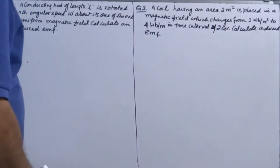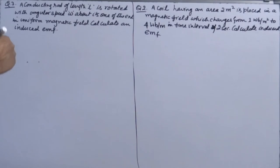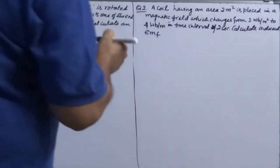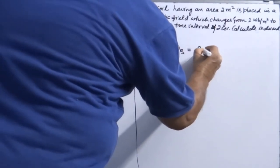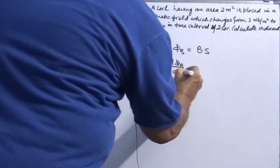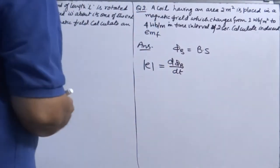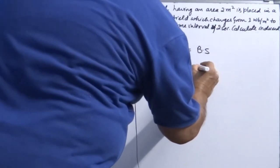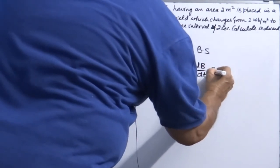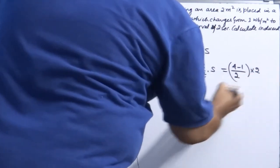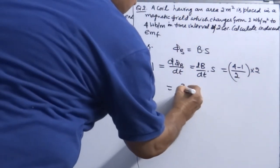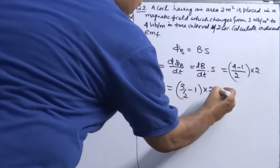Question number two is, a coil having area 2 meters square is placed in uniform magnetic field which changes from this to this. Answer is flux equals B into S, d phi B over dT. I can talk about only magnitude. Then what is changing? Magnetic field. So this will be dB/dT into S, because area is constant. You can find dB over dT easily. That is 4 minus 1 over time interval 2 into S is 2. That comes out 3 by 2 minus 1 into, that is 3 volt.